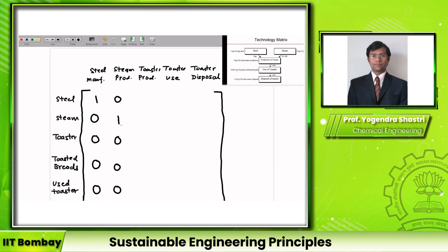The 0.5 megajoule figure is captured in the column for toaster production. Toaster production requires 1 kg of steel (input, so −1) and 0.5 megajoule of steam (input, so −0.5), and it generates 1 toaster (output, so +1). All other coefficients in this column are zero.